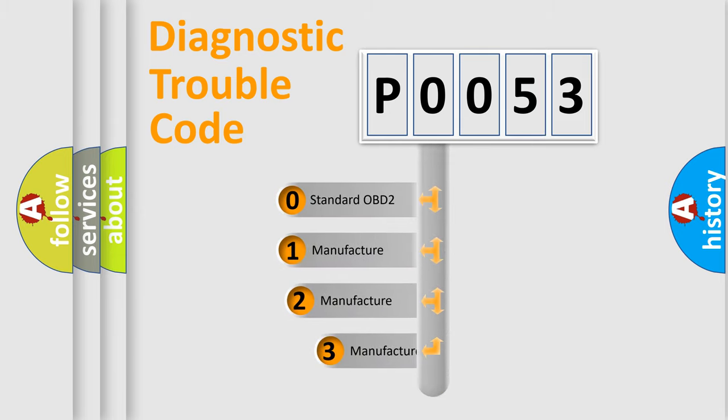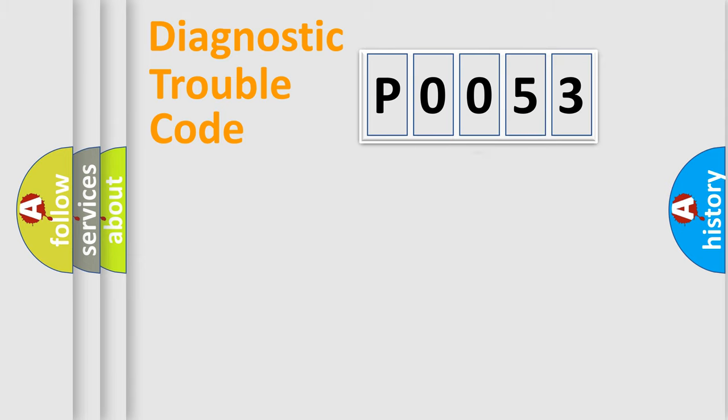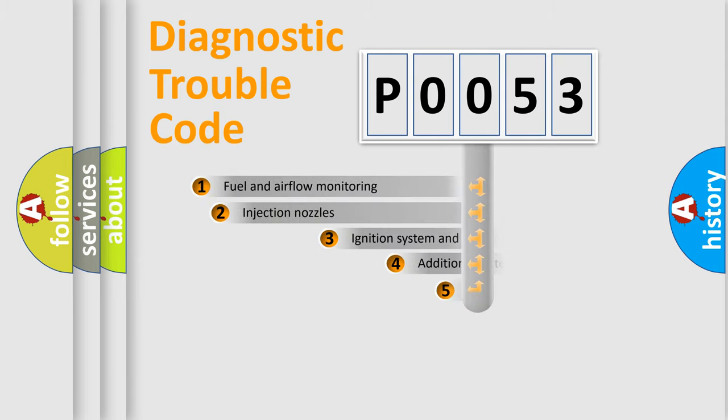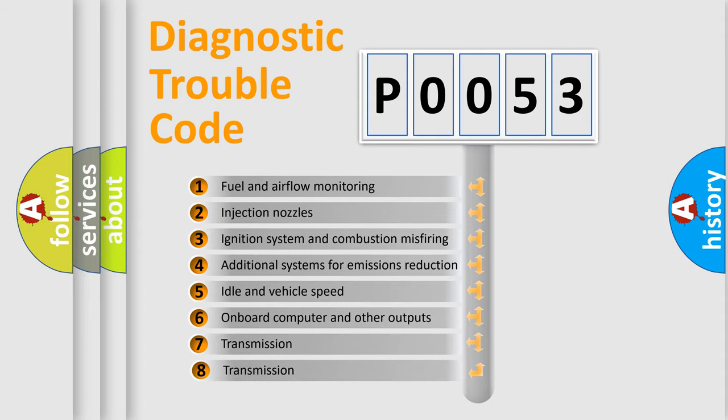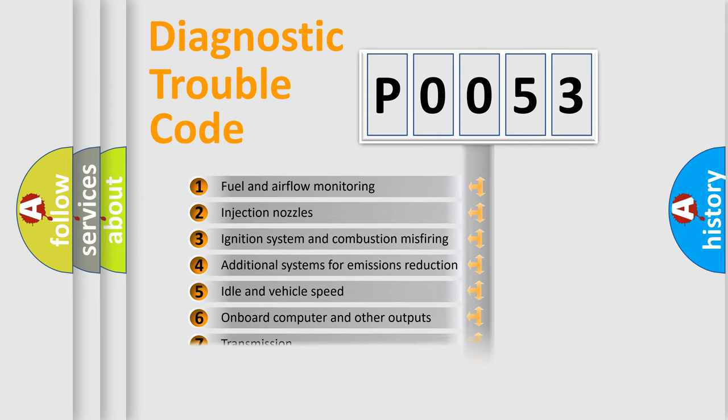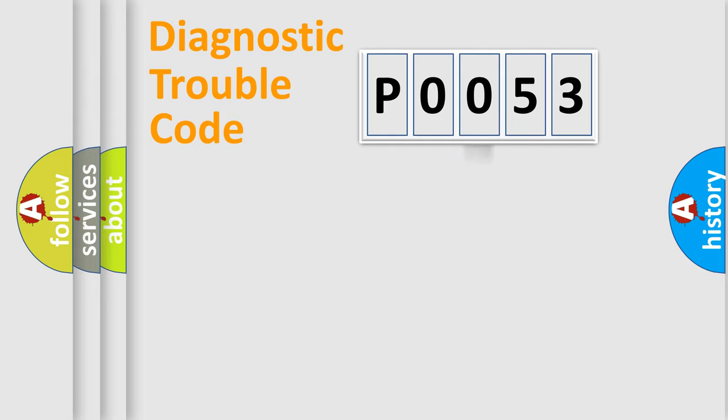If the second character is expressed as zero, it is a standardized error. In the case of numbers 1, 2, 3, it is a car specific error. The third character specifies a subset of errors. The distribution shown is valid only for the standardized DTC code.